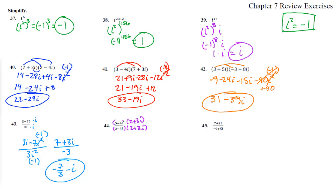On the top, we get 5 times 2 is 10 plus 15i minus 8i minus 12i squared. We'll come back to that. The bottom, 2 times 2 is 4, 2 times 3i is positive 6i minus 6i minus 9i squared.